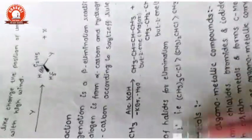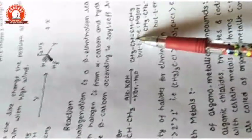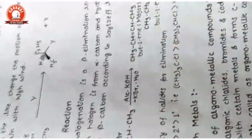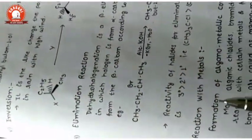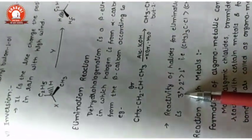The major product is determined by Saytzeff's rule or Hofmann's rule, based on the greater number of alpha hydrogens and hyperconjugation — these names you have heard in Class 11. The reactivity of beta elimination is: tertiary > secondary > primary, because after removal of Br minus a carbocation forms, and carbocation stability follows the same order.